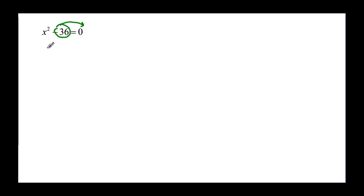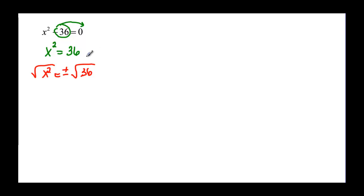Now we have a problem because both the constant and x squared are on one side. So I need to move the constant to the other side by adding 36 to both sides. Now I'm ready to take the square root of both sides: the square root of x squared equals plus or minus the square root of 36. The square and the square root cancel, so x equals plus or minus 6.